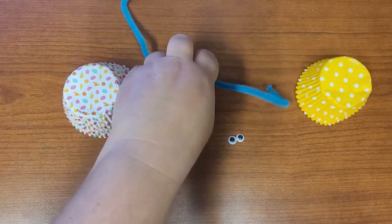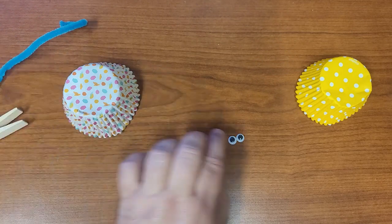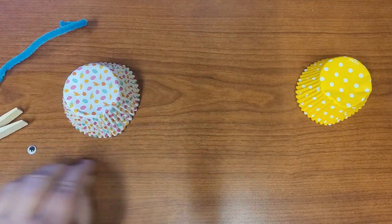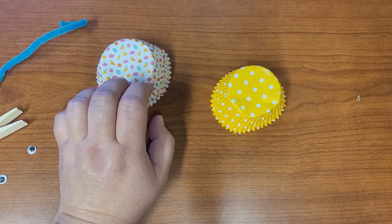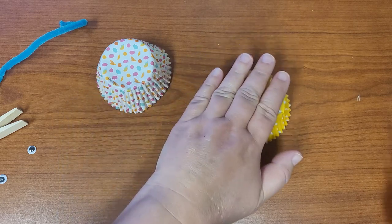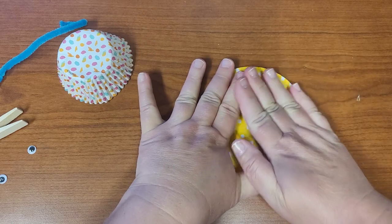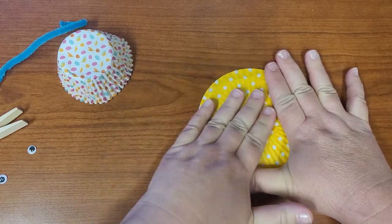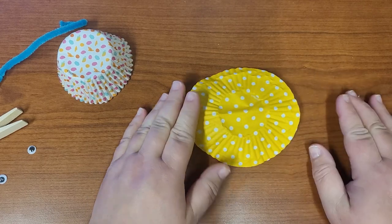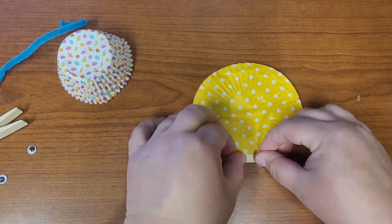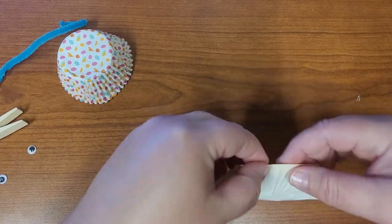So we are going to start by making the butterfly's wings out of the cupcake liners. So we are going to flatten the liner first, make it flat so it is a circle, and then we're going to fold them accordion style. So you're going to fold it over a little like that.